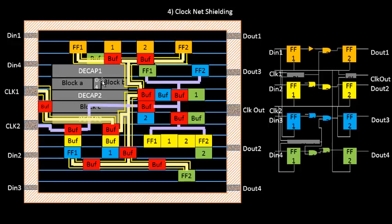The idea is we have to shield all the critical nets, and clock nets are one of the most critical. If there are data nets that are also very critical, it becomes necessary to shield them too. However, it is not always possible to shield all nets in the design because that would increase routing resource consumption significantly. So we target clock nets and other critical nets for shielding.